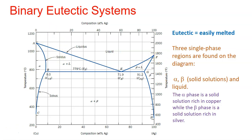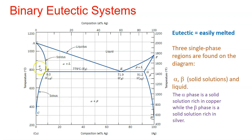The solubility actually decreases back to zero at the melting temperature of copper. The same behavior applies for the silver phase region. At temperatures below 779 degrees Celsius, the solid solubility limit line separating the alpha and the alpha-plus-beta phase regions is known as the solvus line. The boundary between the alpha region and the alpha-plus-liquid region is known as the solidus line.